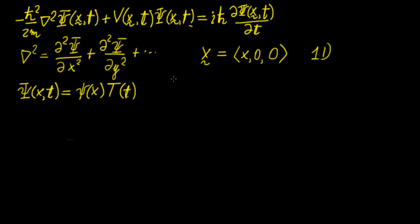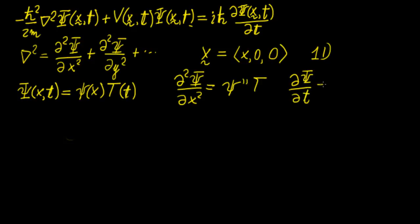We're going to evaluate the derivatives. The second derivative with respect to space acts only on the spatial part, giving us ψ″(x)·T(t). The time derivative follows the same logic: ψ remains constant and we differentiate T, giving ψ·T′. Now we replace these back into the Schrödinger equation. So we have: −ℏ²/2m times ψ″T, plus the second spatial derivative term, written with T.